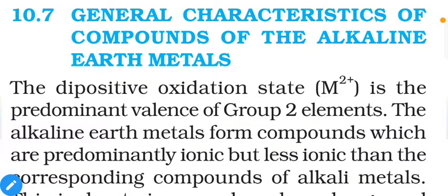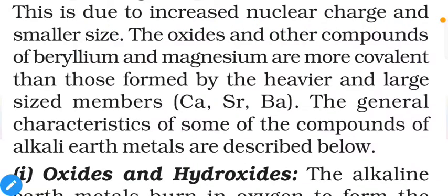These metals are quite reactive, and that's why alkaline earth metals form compounds which are predominantly ionic, but less ionic than the corresponding compounds of alkali metals. Alkali metals are comparatively more electropositive than alkaline earth metals, so the ionic nature of alkali metals is stronger. Still, alkaline earth metals give ionic compounds due to increased nuclear charge and smaller size.